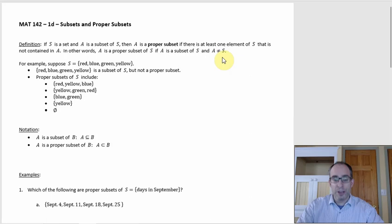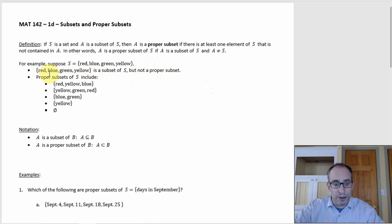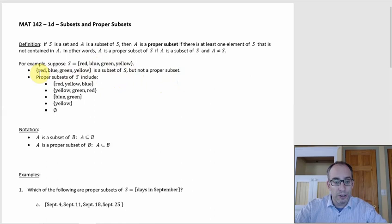This is much easier with examples to get a feel for how this works. So if S is the set consisting of the four colors red, blue, green, and yellow, then the set consisting of red, blue, green, and yellow would be a subset of S — because any set is a subset of itself — but it's not a proper subset, because there's nothing in S that's not in here.